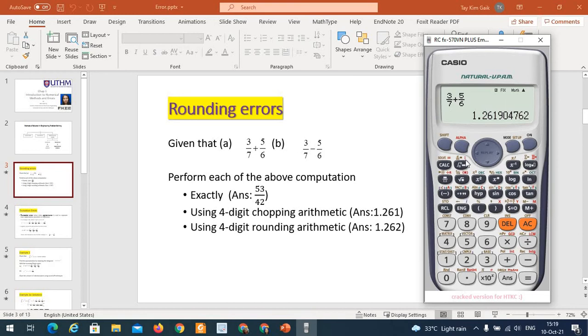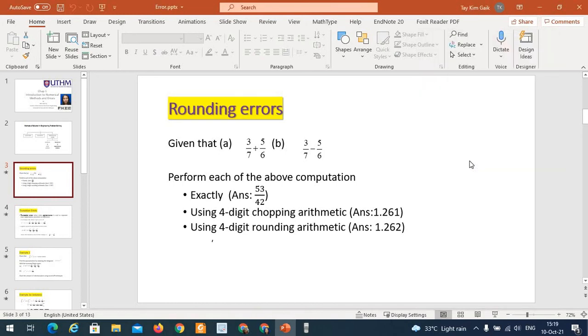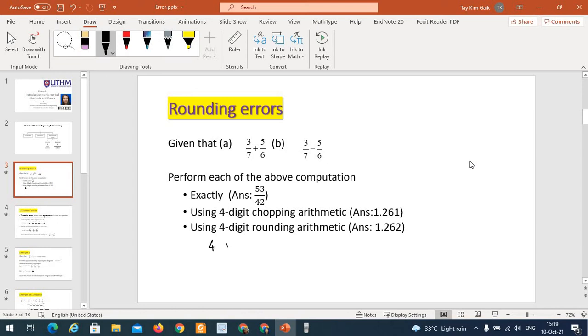And 4 digit chopping, 1.261, the rest of the digit truncated, remove it. 4 digit rounding, 1.261 is 4 digit. Behind 1, 9 which is greater than 5, so we increase 1 to the 1, so become 1.262, round to 4 decimals. Behind the 9 is 0 which is less than 5, so we not increase the 9 here, become 1.2619.